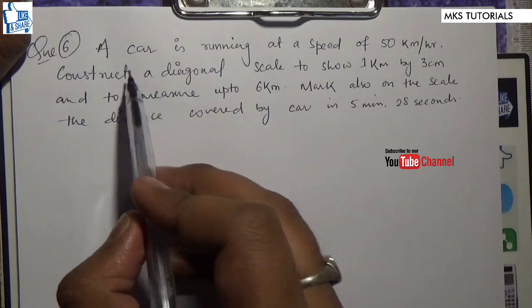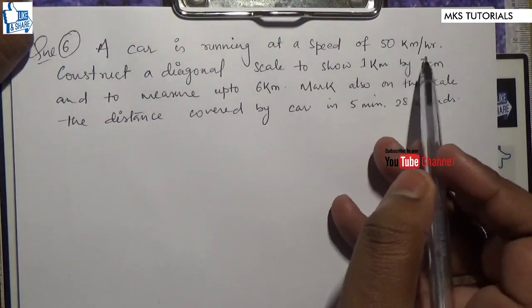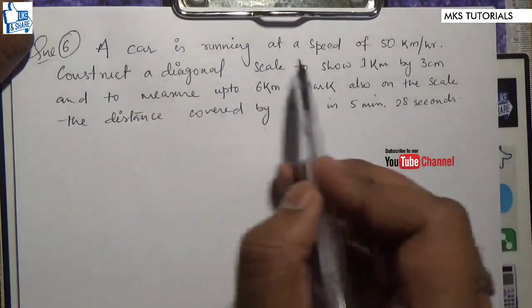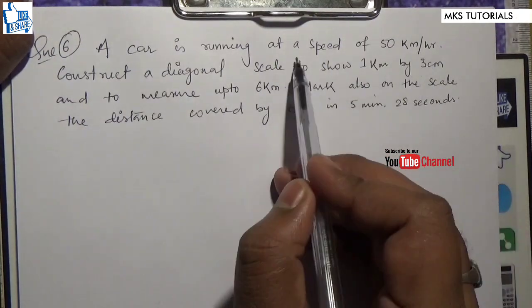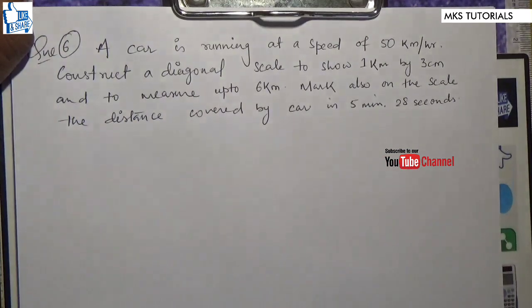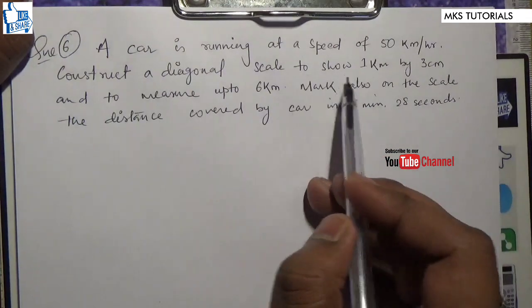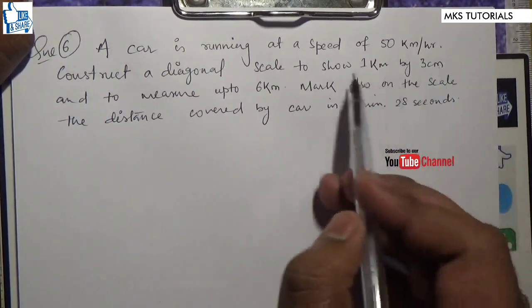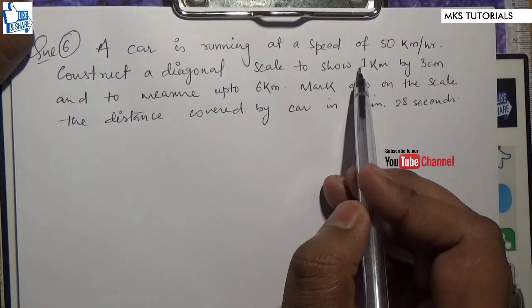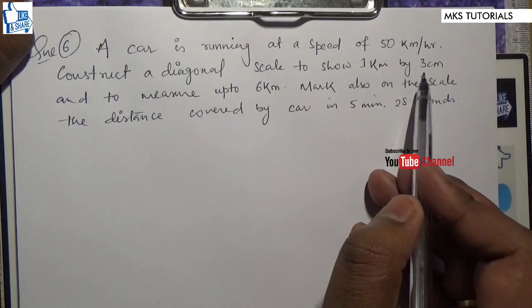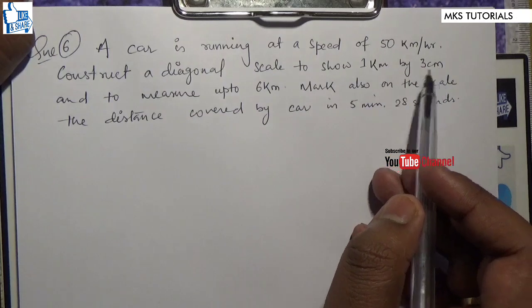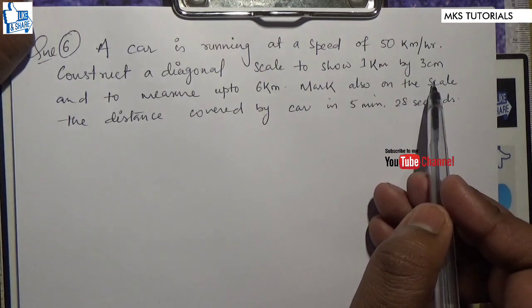This question is: a car is running at a speed of 50 km per hour. Construct a diagonal scale to show 1 km by 1 cm and to measure up to 6 km. This is representative fraction.